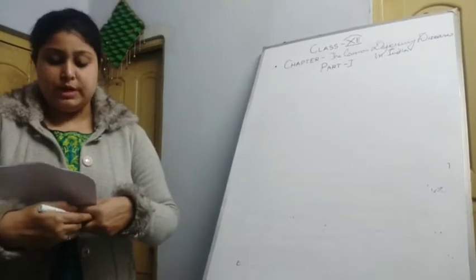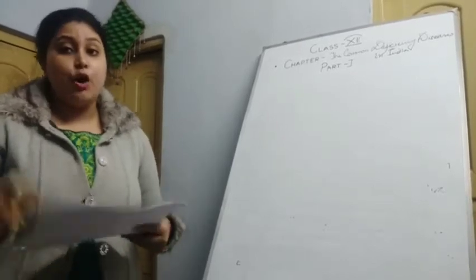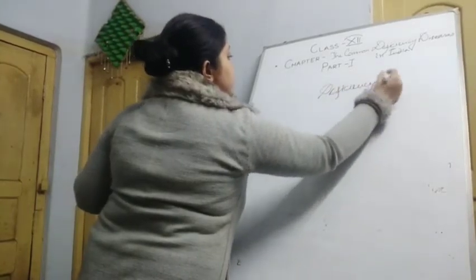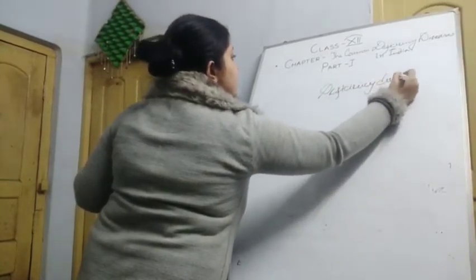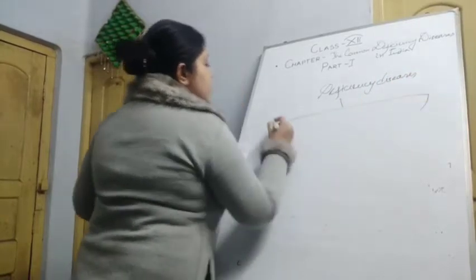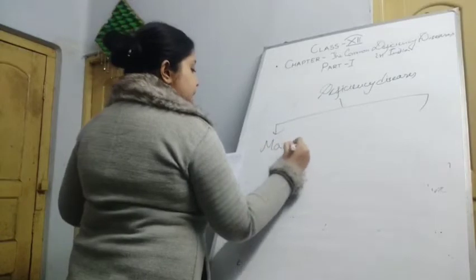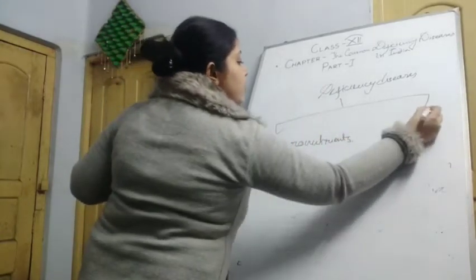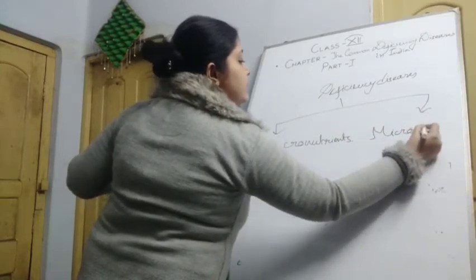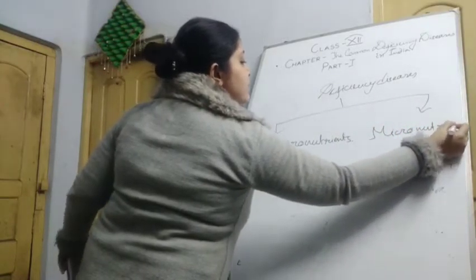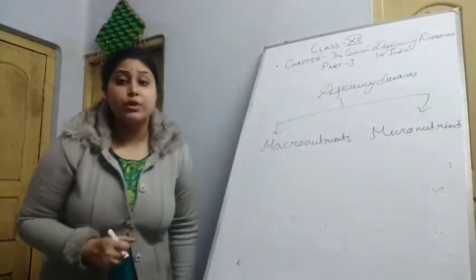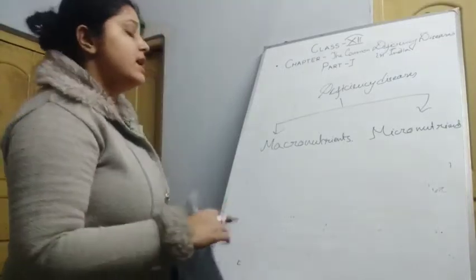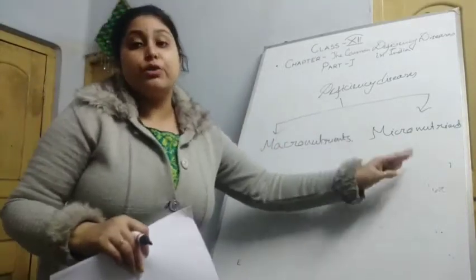The deficiency diseases are mainly of two types. The first one is due to macronutrients and the second one is due to micronutrients. The carbohydrates, protein, and fat are the macronutrients of the diet, and the vitamins and minerals are the micronutrients of the diet.